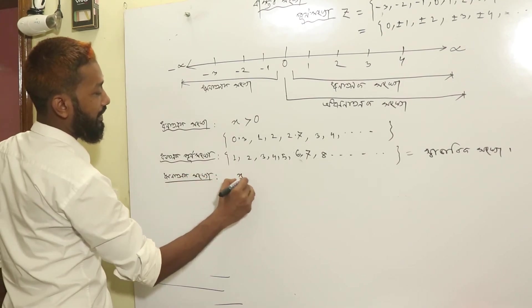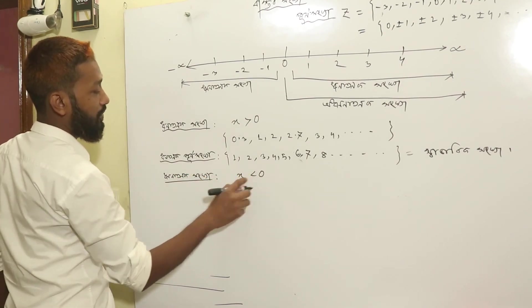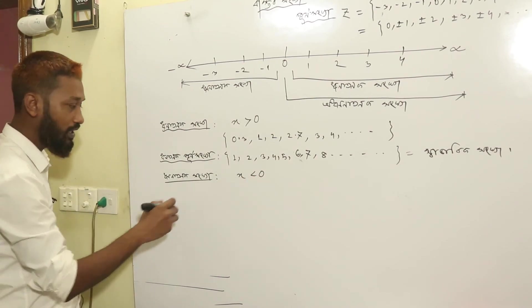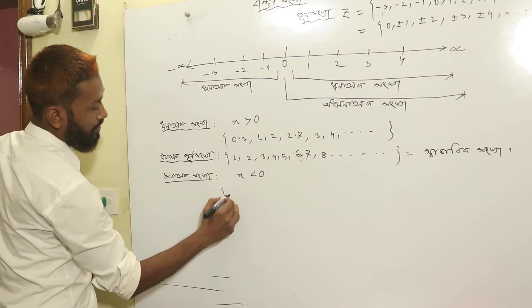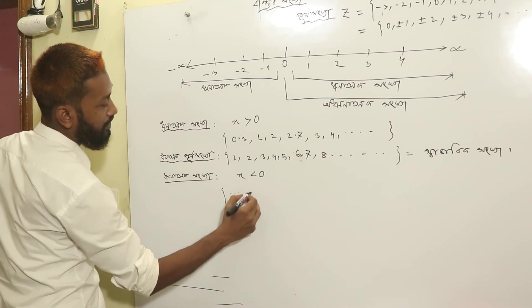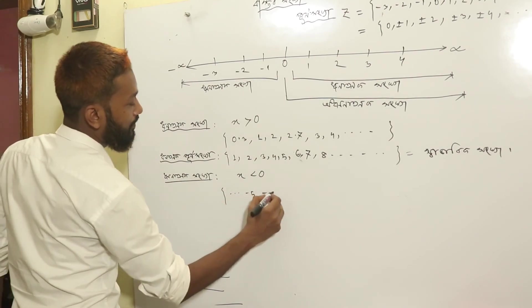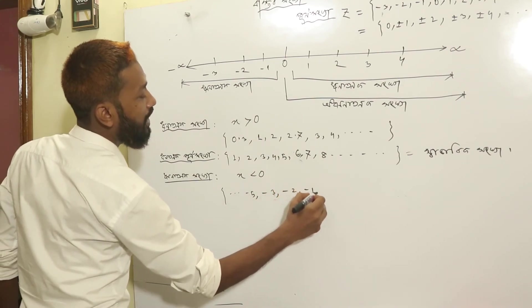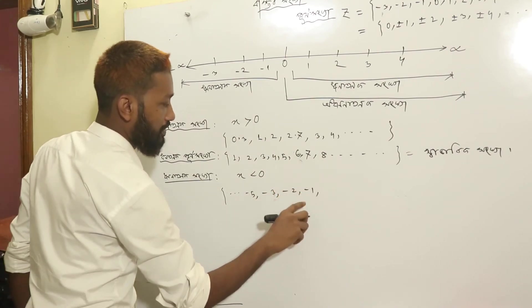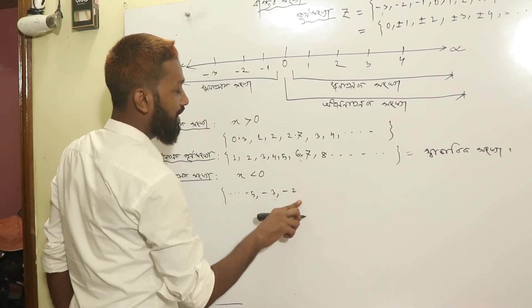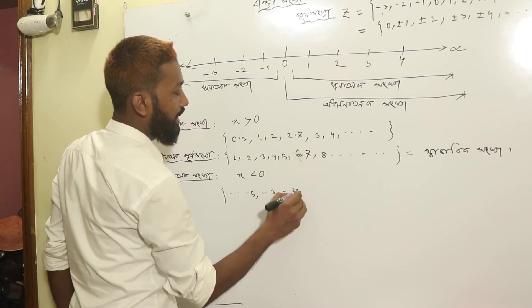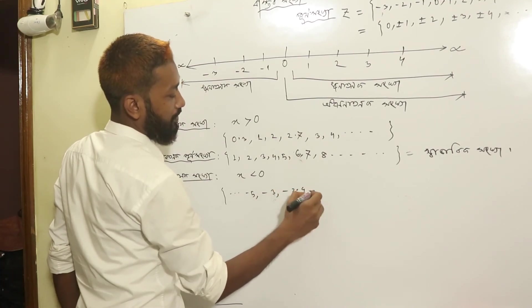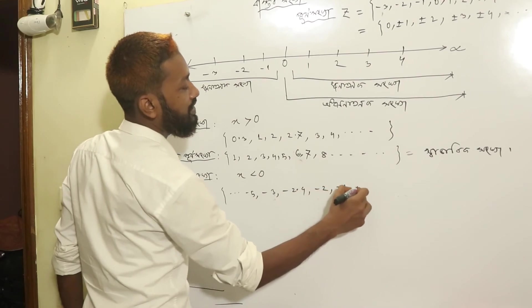So, if you look at 0, it will be 60. Dot, dot, dot — minus 5, minus 3, minus 2, minus 1. Minus 2.4, minus 2, minus 1, 0.